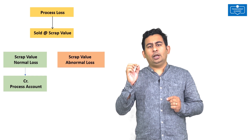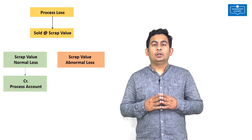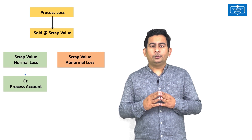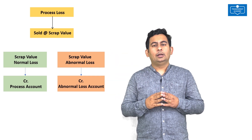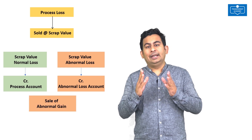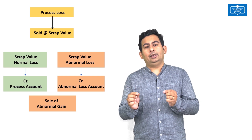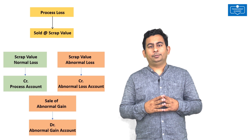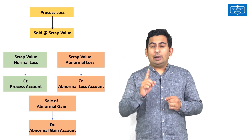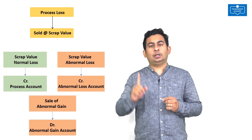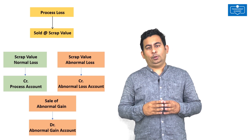Moving on to scrap value from sale of abnormal loss: abnormal loss is unexpected, so revenue from its sale is also unexpected and totally unrelated to the process. We credit the sale of abnormal loss to the abnormal loss account. Similarly, there is an opportunity loss from sale of abnormal gain — this is also unrelated to the process, so the opportunity loss from sale of abnormal gain will be debited to the abnormal gain account.